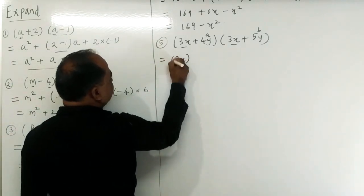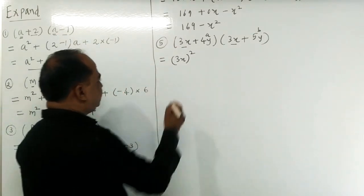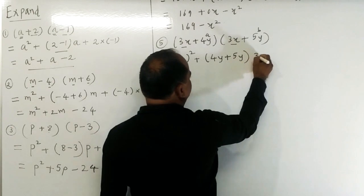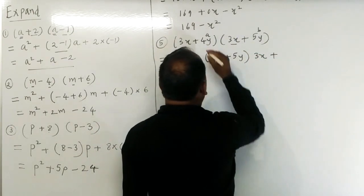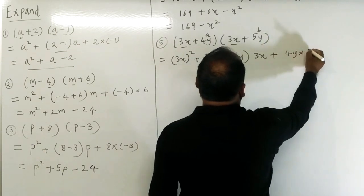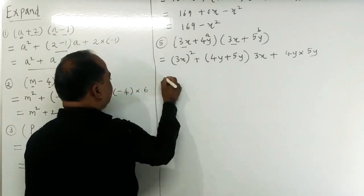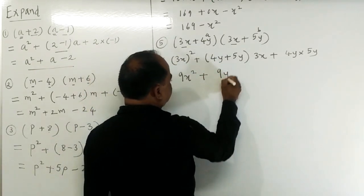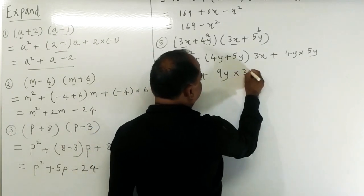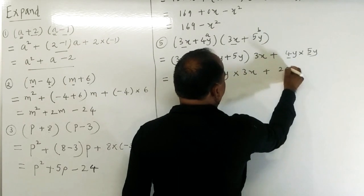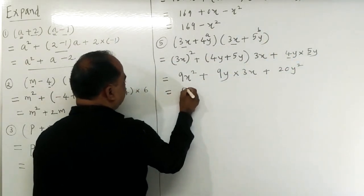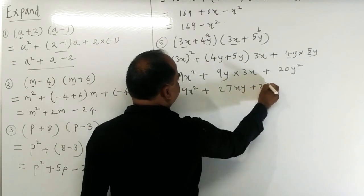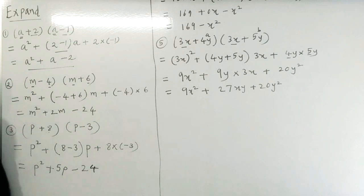Example 5: (3x + 4y)(3x + 5y). The first term is (3x) squared which is 9x squared. Then plus (4y + 5y) into 3x, which gives 9y times 3x. Plus 4y times 5y which is 20y squared. So the answer is 9x squared plus 27xy plus 20y squared.